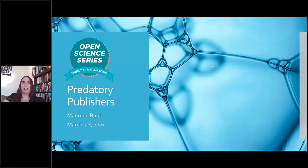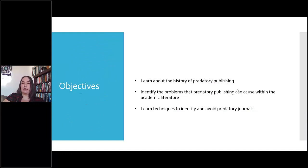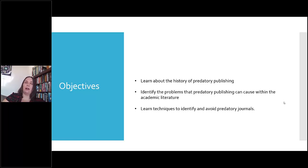I'm Maureen Babb, a science librarian at the University of Manitoba. I'm going to be presenting today in the Open Science series on predatory publishers. What I'm hoping to cover is that you'll learn about the history of predatory publishing, identify the problems it can cause within the academic literature, and learn techniques to identify and avoid predatory journals — both in terms of not using content from them and not publishing in them.